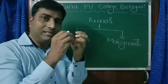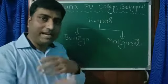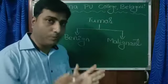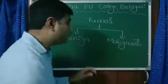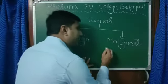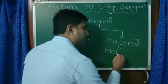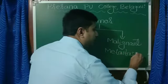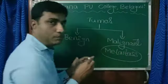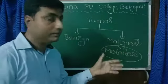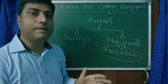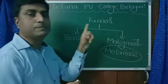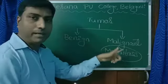From the malignant tumor, cells move off, get mixed with the blood, and start spreading throughout the body. That spreading of cancer cells is called metastasis. So these are the two types of tumor: benign, which is restricted to a place, and malignant, which spreads throughout the body.